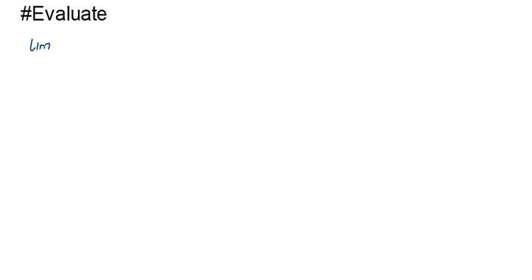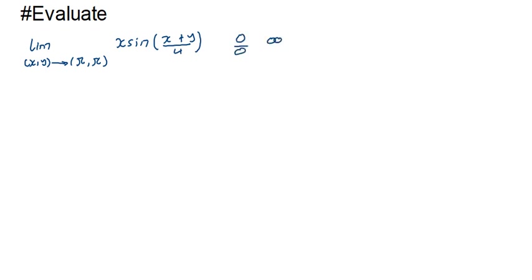Let's try to evaluate the limits for functions of several variables. It's not really that different compared to functions of single variables — we use the same concept, just that in this case we're dealing with two variables, x and y. When we substitute, we should make sure we don't get an indeterminate form such as zero over zero or infinity over infinity.